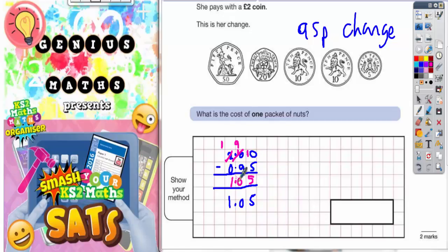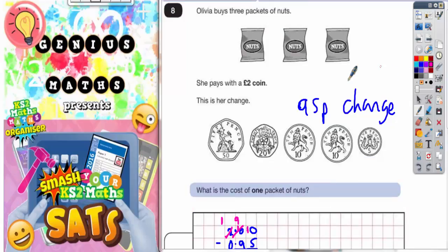So we are indeed left with one pound five. So she must have spent one pound five on three packets of nuts. Remember, one pound five and 95p adds up to your two pounds. So three packets of nuts, one pound five.